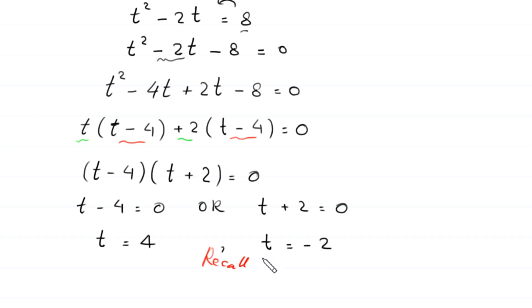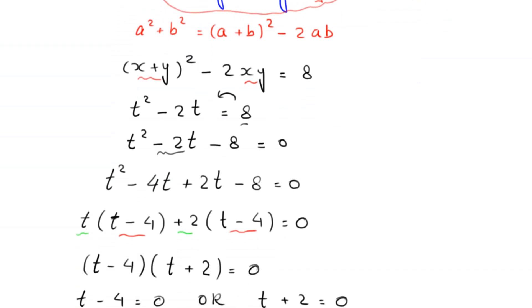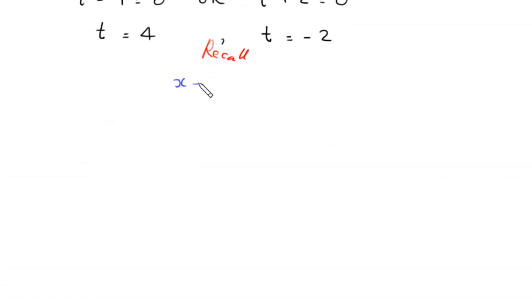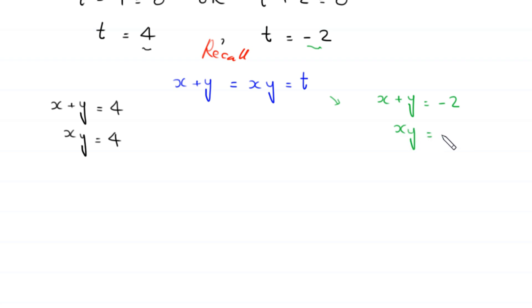Recalling that x plus y equals xy equals t: when t equals 4, we get the system x plus y equals 4 and x times y equals 4. When t equals negative 2, we get another system: x plus y equals negative 2 and x times y equals negative 2.